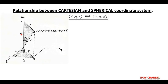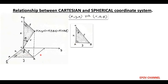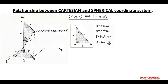Now, for the relationship, we consider right angle triangles OAB and OCP. First, we consider right angle triangle OAB that is on the xy plane. Here, OA equals to x, AB equals to y and OB equals to rho, and radius rho makes an angle phi with respect to x. So, using right angle triangle and trigonometric concepts: x equals to rho cos phi, y equals to rho sin phi, and angle phi can be determined using tan inverse of y upon x. Also, we can write rho equals to under root of x squared plus y squared.